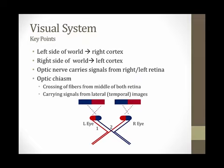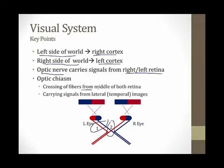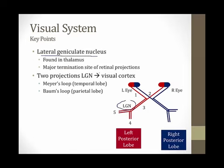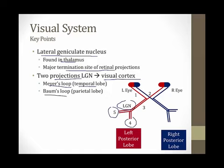Let me highlight some key points about the visual system to keep in mind. The left side of the world is perceived by our right visual cortex, and the right side of the world by our left cortex. The optic nerve, which is point one, carries signals from the left and right retina to the brain. The optic chiasm, which is point two, has fibers crossing from the middle of both retinas — those fibers on the middle portions of both retinas are perceiving the lateral or temporal portions of the world, which will be important when we talk about bitemporal hemianopsia. The lateral geniculate nucleus, found in the thalamus, is the major termination site of the retinal projections. There are two projections from the lateral geniculate nucleus to the visual cortex in the occipital lobe: Myers' loop, which is number five and is found in the temporal lobe, and Baum's loop, which is number four and is found in the parietal lobe.